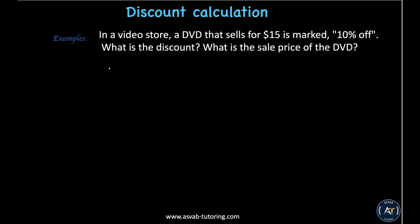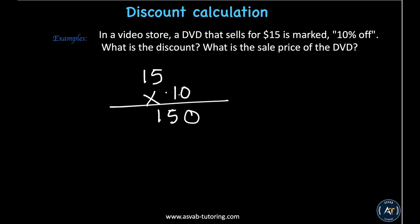Now we'll learn how to calculate discount. Problem: a DVD that sells for $15 is marked 10 percent off. What is the discount and what is the sale price? First, multiply 15 by 0.10. Forgetting about the decimal, that's 150. Move two decimal places — the discount is $1.50.